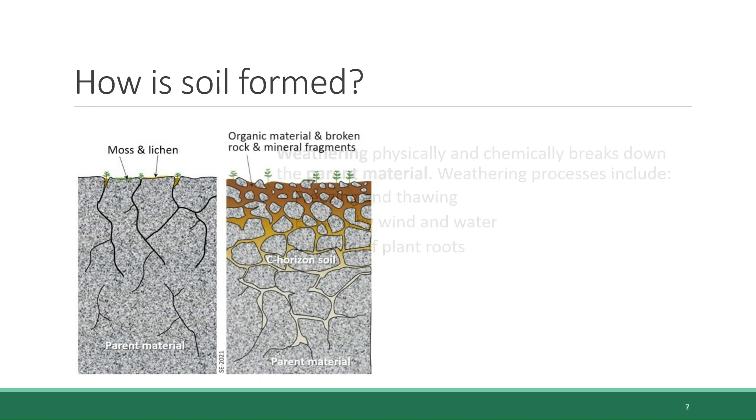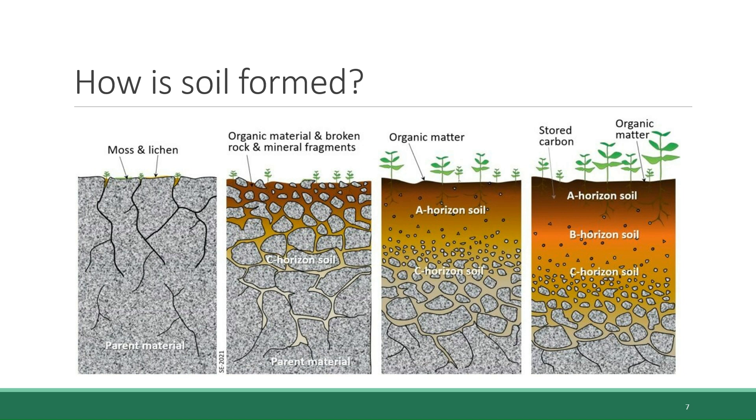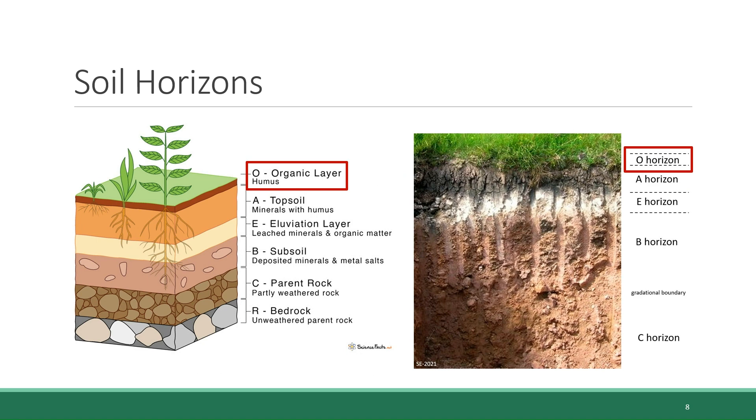As the parent material breaks down and organic matter accumulates, the soil begins to form distinct layers that are called horizons. These layers are distinguished both by what they are composed of and where they are located. The topmost layer of the soil is called the O-horizon, or the organic layer. It's made of organic materials in various stages of decay, including fallen leaves, dead plants, etc. Not all soils have an O-horizon, and in the case of a lot of agricultural operations, the O-horizon is stripped away by plowing.